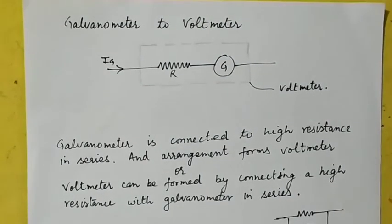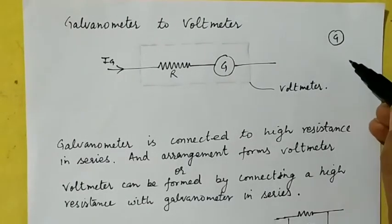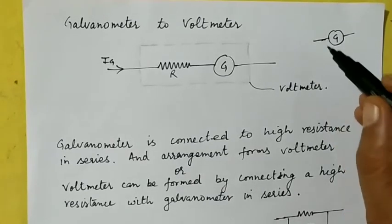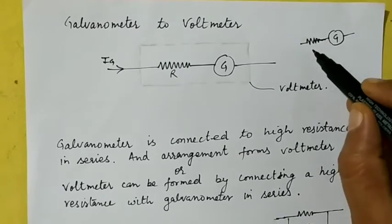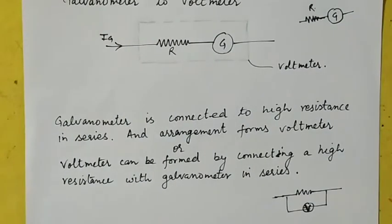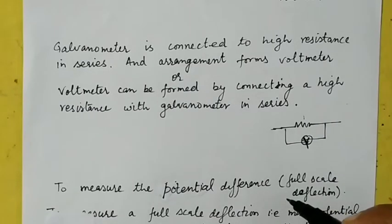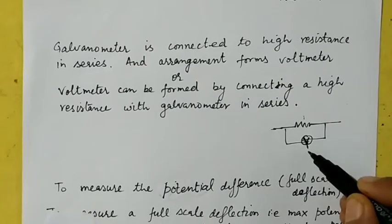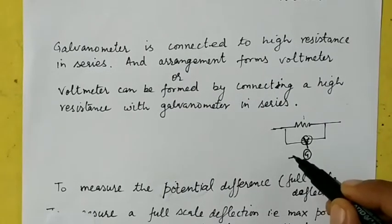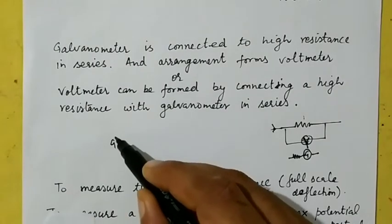In this video we will discuss how a galvanometer can be used as a voltmeter. Suppose I have a galvanometer and I want to use it as a voltmeter. For that, I connect a very high resistance in series with this galvanometer to measure the potential difference. When the galvanometer is connected to a high resistance in series, the arrangement forms a voltmeter. A voltmeter is attached in a parallel combination, and this voltmeter is basically a galvanometer attached with a high resistance.